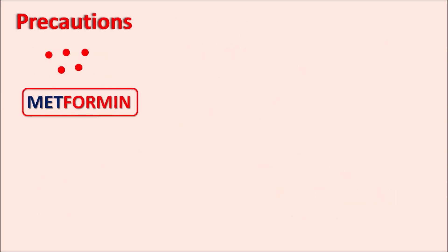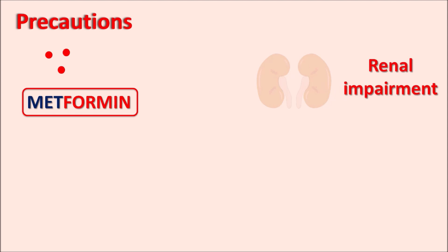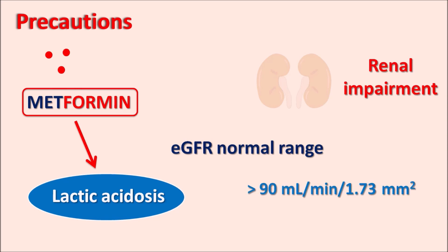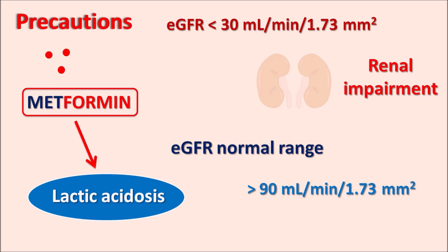Metformin is excreted unchanged through the kidneys, so renal impairment leads to accumulation of metformin in the blood and consequently lactic acidosis. Renal function should be assessed regularly, particularly the estimated glomerular filtration rate (eGFR), which is normally greater than 90 mL/min/1.73 m². When eGFR falls below 30 mL/min/1.73 m², metformin is contraindicated; in moderate renal impairment, the dose should be reduced.